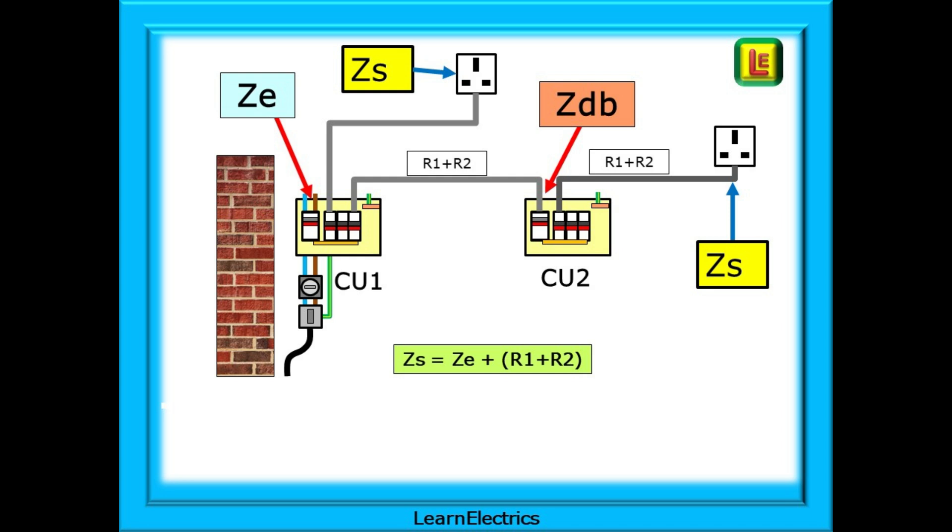We call it ZDB. Z at this DB. Z at this distribution board. And now our circuit labels look like this.